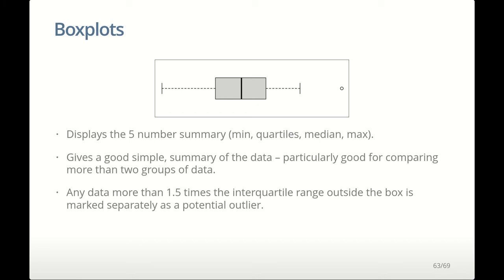The last graphical summary for numeric data is the box plot, which essentially plots the five-number summary. It plots the median as a line, the lower quartile as the bottom of the box, the upper quartile as the top, and the length of the box is the interquartile range. It then plots the smallest and largest values as whiskers. Box plots are particularly good when you have multiple groups to compare, because you can easily put box plots next to each other — you can put 10 box plots side by side without a problem, whereas it would be quite difficult to compare 10 histograms.